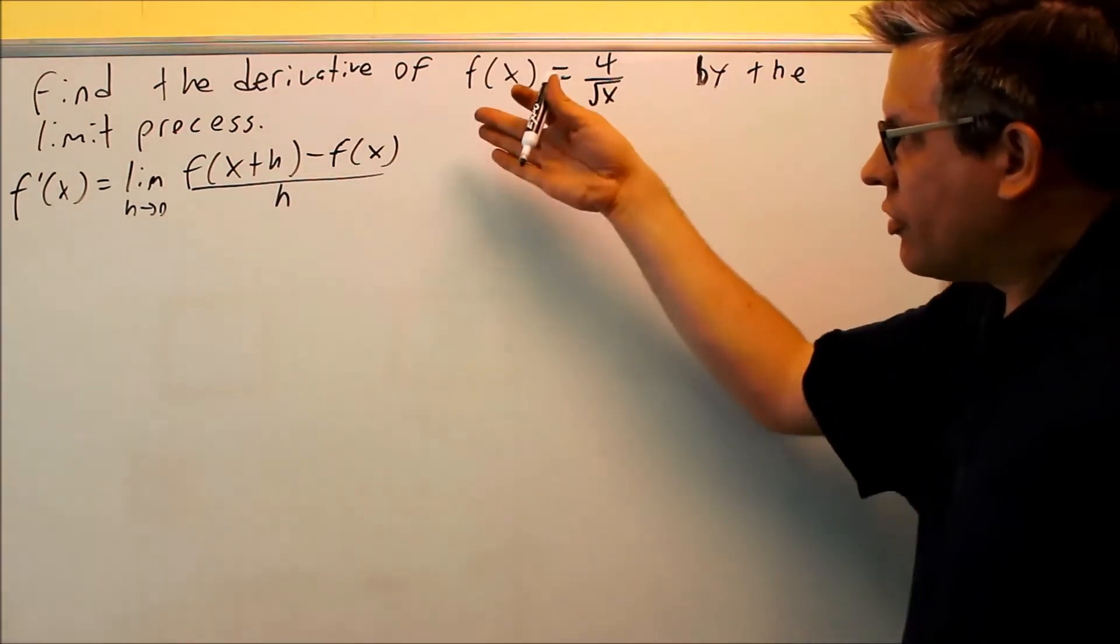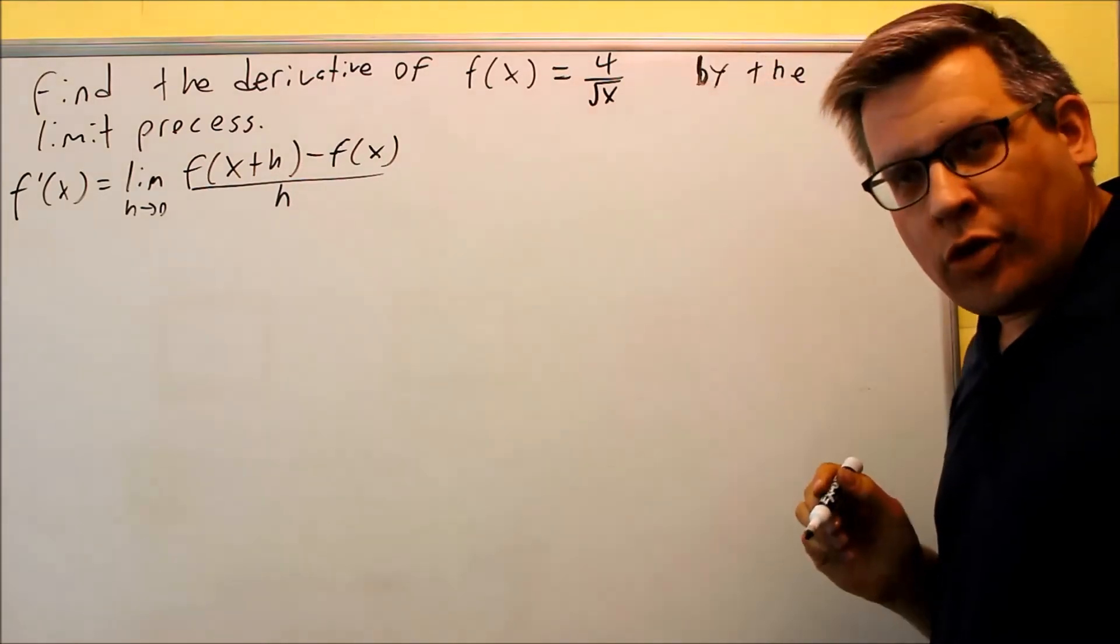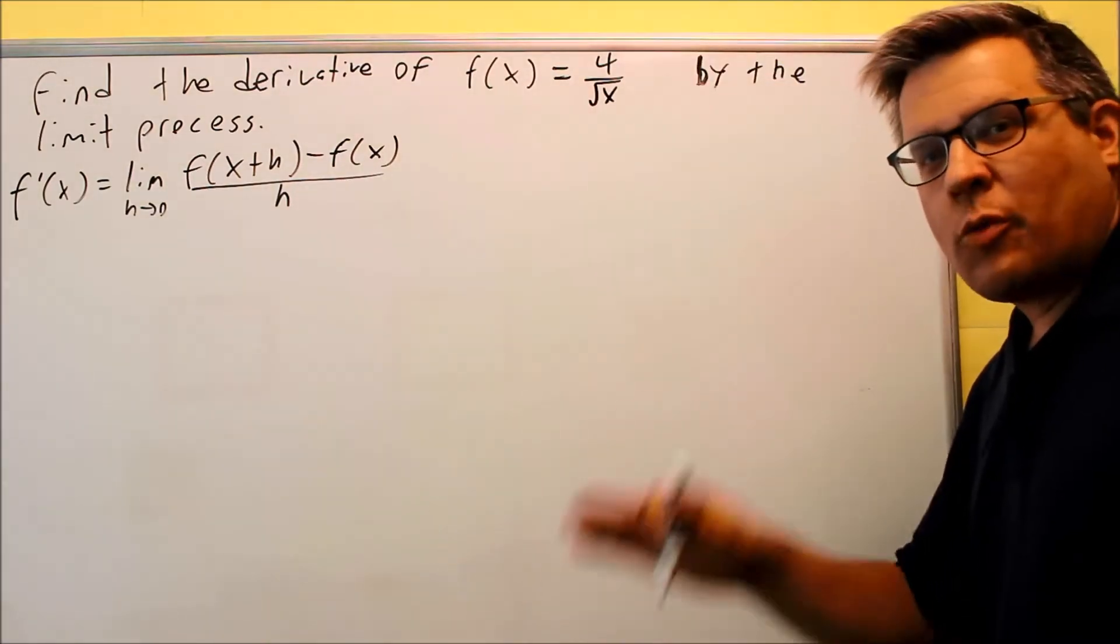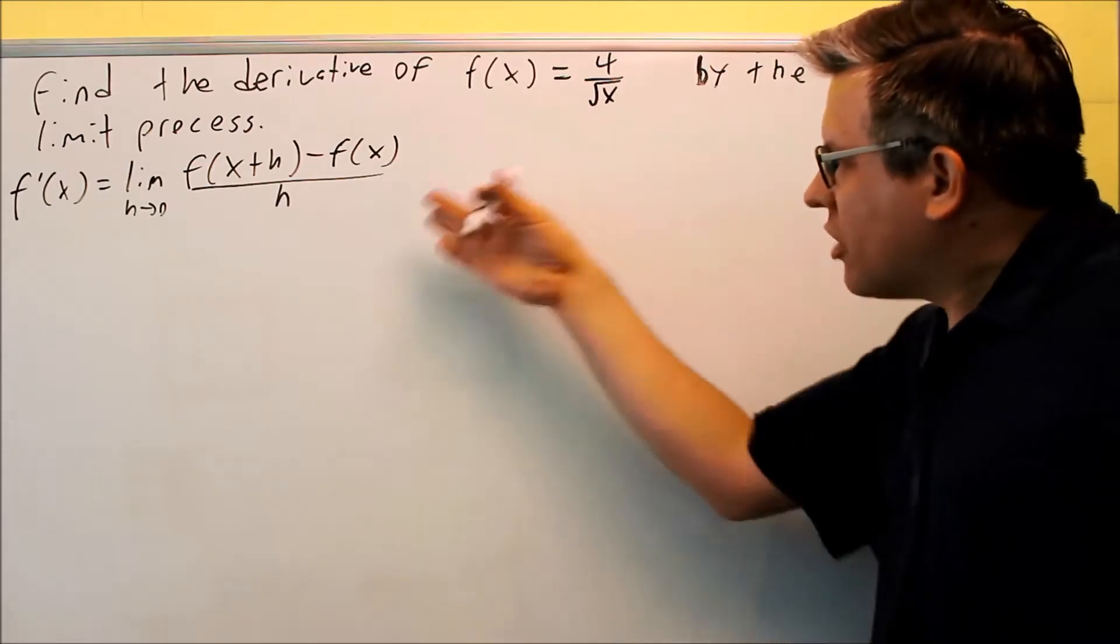For our next problem, we're still doing the same thing, limit process, but now we have a fraction and we have a square root. It's going to be kind of a long problem, so hopefully you've had some caffeine here. Keep on going all the way through. So let's jump into it.